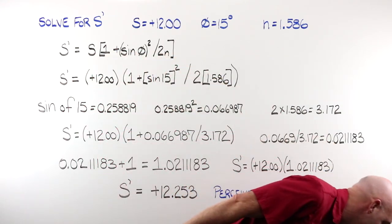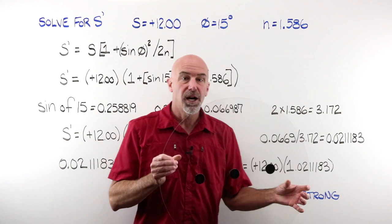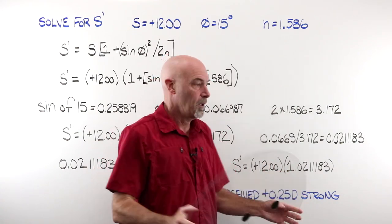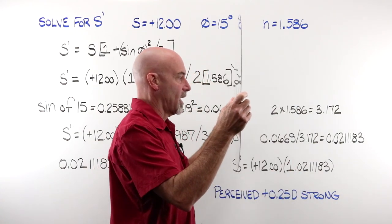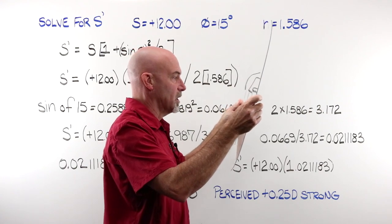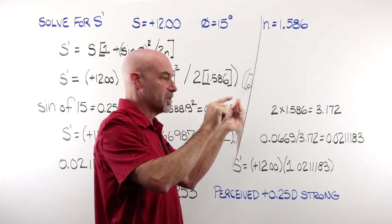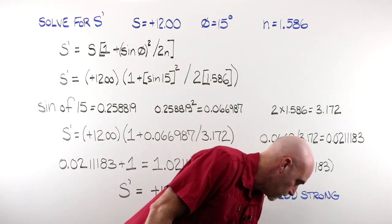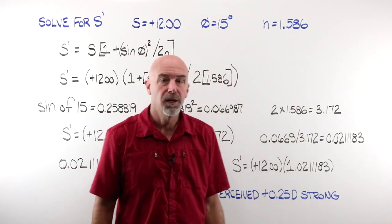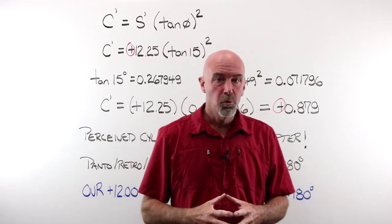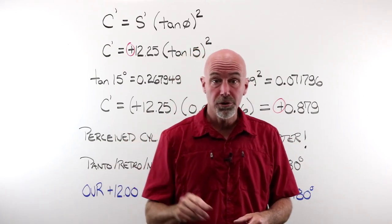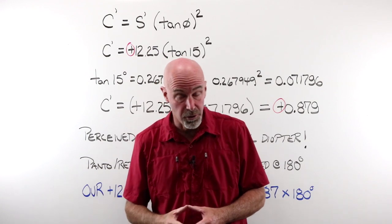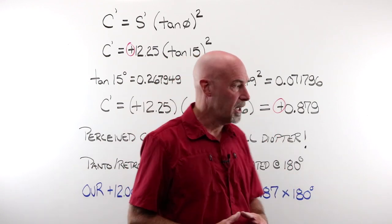If I take a 12-diopter spherical lens, I place it in front of my eye, and I tilt that lens 15 degrees, my brain will now perceive that lens as being a full quarter-diopter stronger than it is. All right, we got through part one. Let's go through part two, where we determine the amount of cylinder that will be perceived when we tilt that lens.